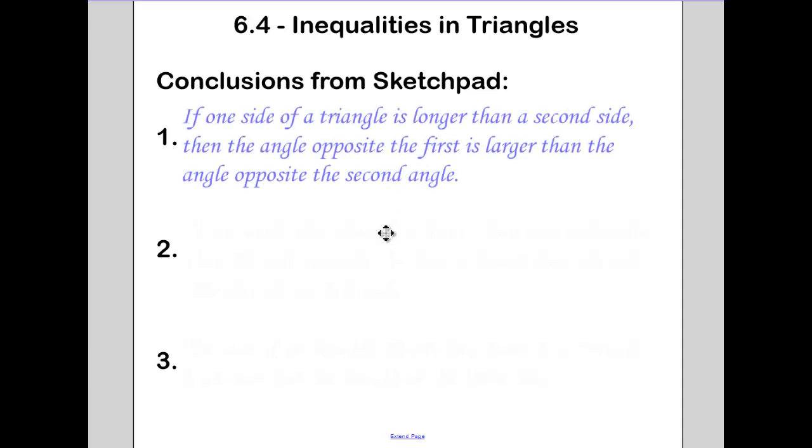First one. If one side of a triangle is longer than a second side, then the angle opposite the first is larger than the angle opposite the second angle. So our abbreviation for that is going to be longer side gives larger angle.